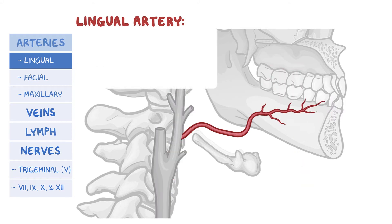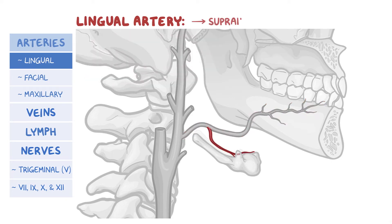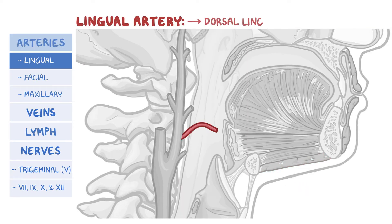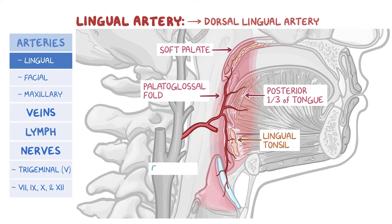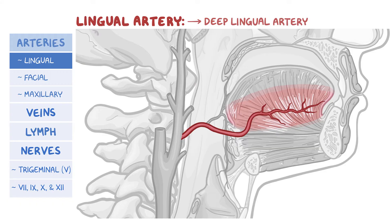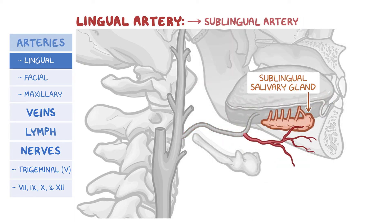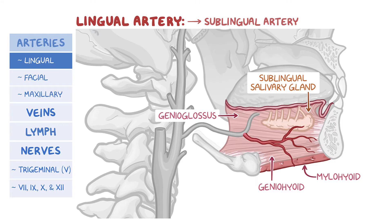The lingual artery gives off four branches: the suprahyoid artery, the dorsal lingual artery, the deep lingual artery, and the sublingual artery. The suprahyoid artery runs along the hyoid bone and supplies the omohyoid, sternothyroid, and thyrohyoid muscles. The dorsal lingual artery supplies the posterior one-third of the tongue, soft palate, palatoglossal fold, lingual tonsil, and epiglottis. The deep lingual artery supplies the tongue's ventral surface. The sublingual artery supplies the sublingual salivary gland, the genioglossus, geniohyoid, and mylohyoid muscles, and the mandible.